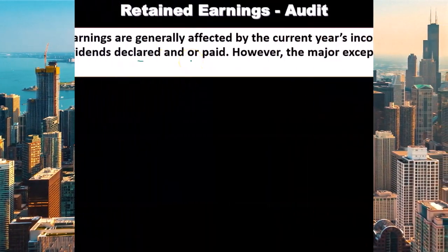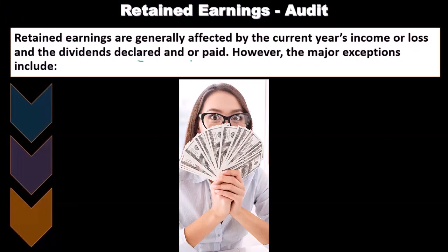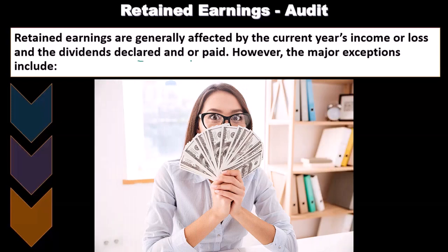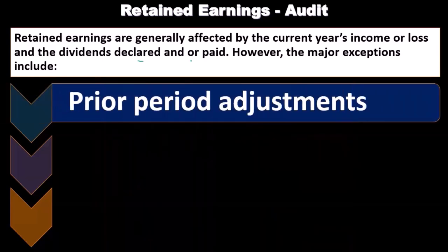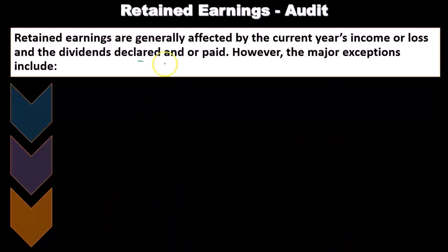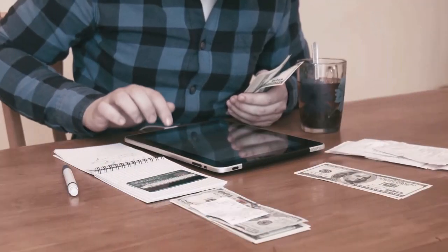Then they'll pay the dividend at a later point in time, at which point they credit cash — a decrease in cash — and reduce the dividends payable liability account. That's basically it with regards to retained earnings: it's the net income or loss that rolls into it, and the dividends. We've talked about auditing dividends.